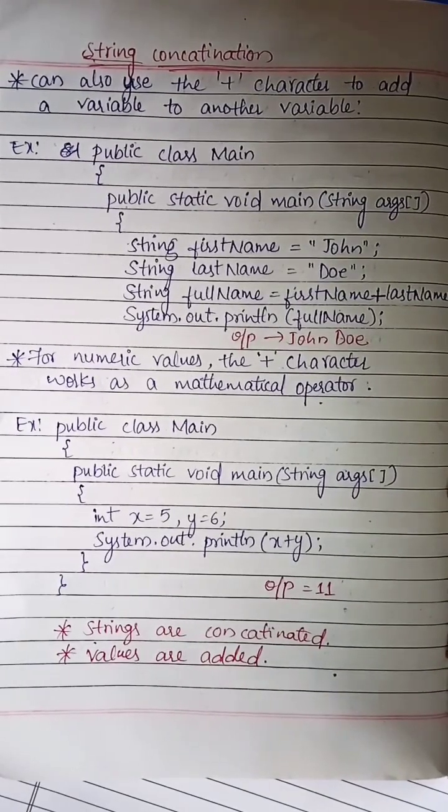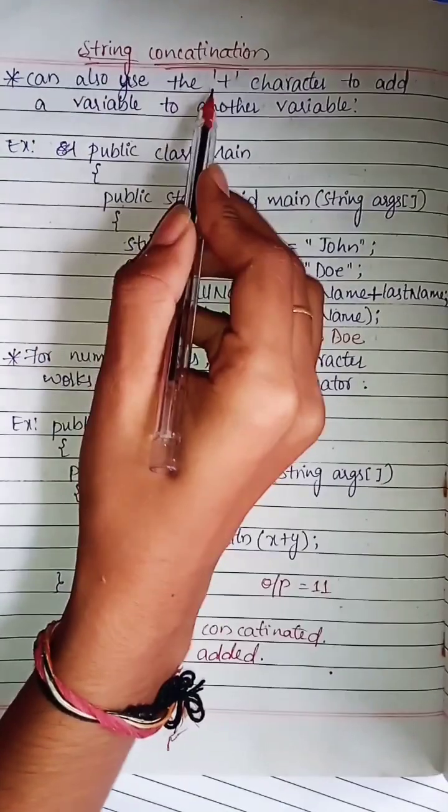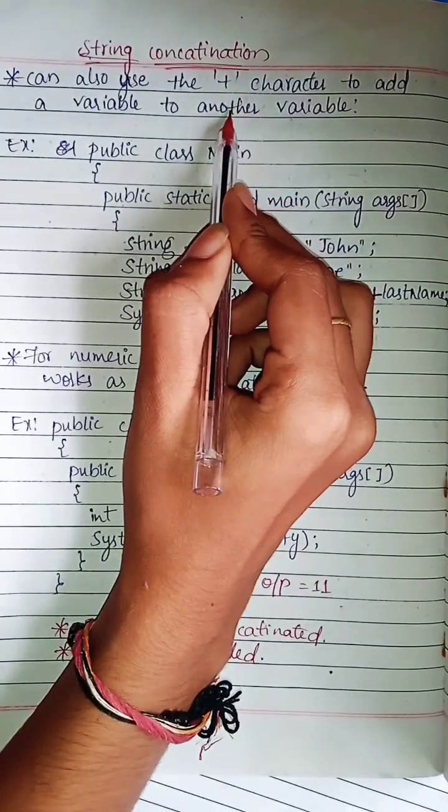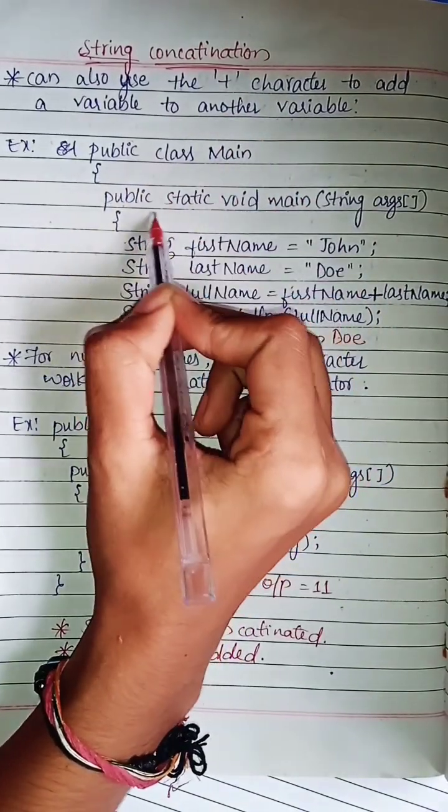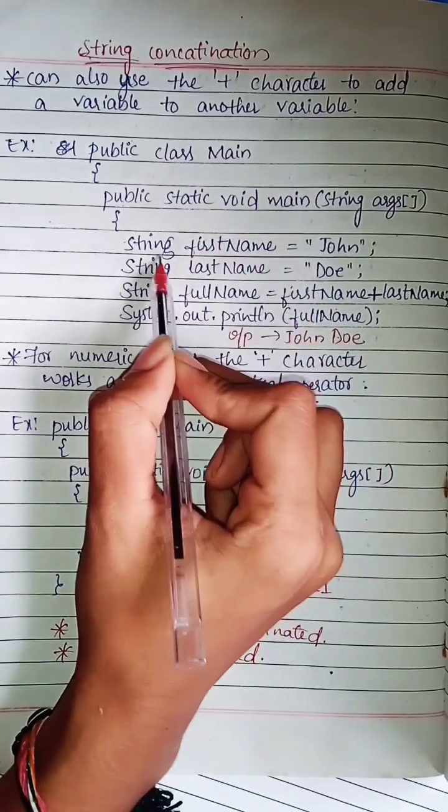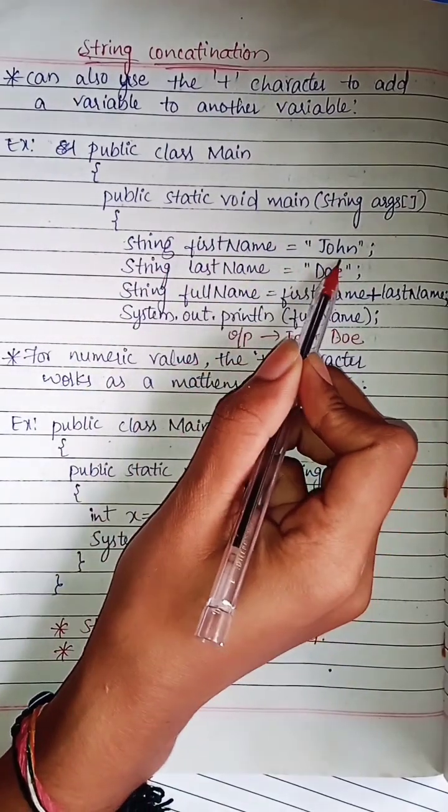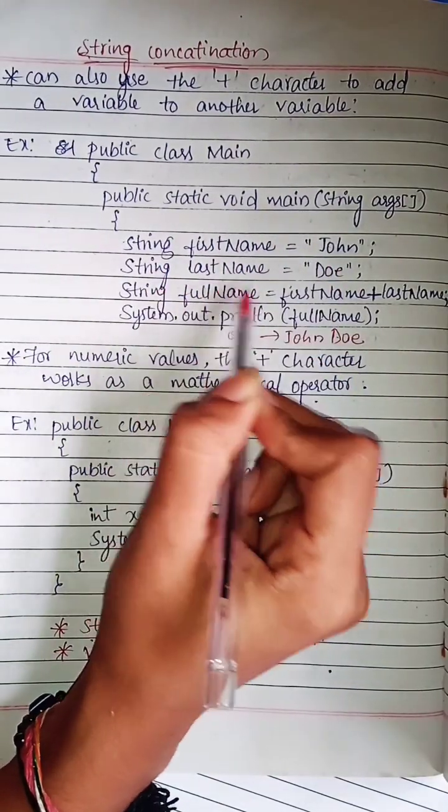Hello everyone, in this video I'm going to explain string concatenation. The plus character is used to add two variables. For example, in a public static void main method with String argument, String firstName is John, String lastName